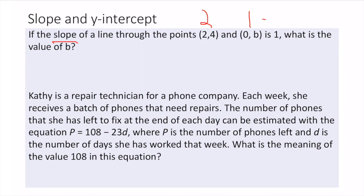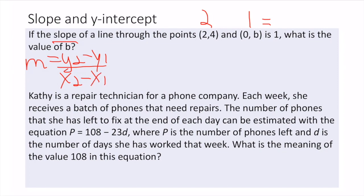Any time I see the word 'is,' that means equals. So using the basic slope equation (y₂ - y₁) / (x₂ - x₁), I fill in everything I know. My slope is 1, y₂ is 4, y₁ is b, x₂ is 2, and x₁ is 0.